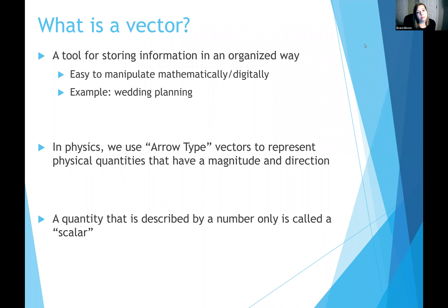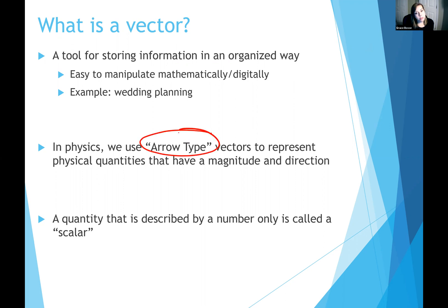A vector is basically a tool to store information. There are lots of different examples of vectors you'll encounter in various fields. In computer science, a vector is basically like an array that holds a lot of information in different cells. In physics, a vector typically means a physical quantity described by both a direction and a magnitude. We're going to focus on what we call arrow-type vectors, but be aware that vectors appear in many different fields.